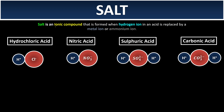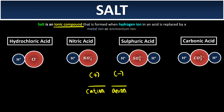Let us break it down. As we know, an ionic compound consists of two parts. The first part is the cation, which is the positively charged ion. The second part is the anion, which is the negatively charged ion. All of the hydrogen ions will eventually be the cation of the acid, while the anion differs from acid to acid.